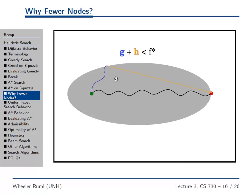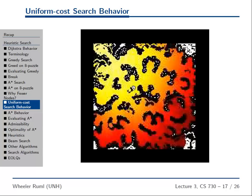Here's a concrete example in Warcraft pathfinding. If you have an agent up here trying to get down there, the picture shows all nodes expanded by uniform cost search — basically the whole map. The nodes are colored by when they were expanded: light yellow ones were expanded early, red ones later. At the very end, we expand nodes down here and reach the goal. So you can see it's visiting all nodes whose g value is less than the optimal solution cost.